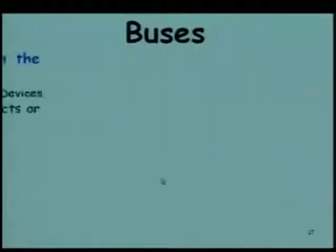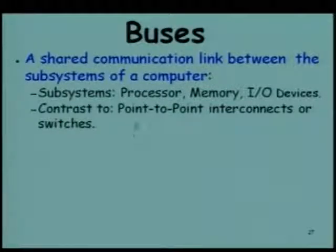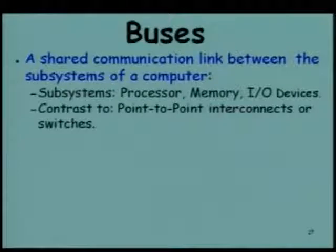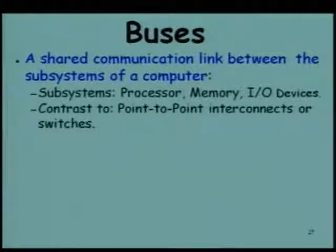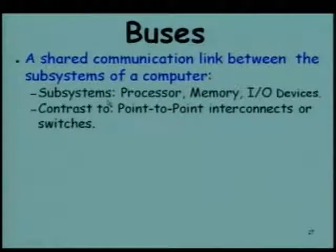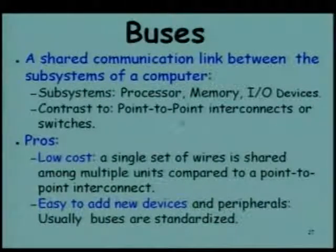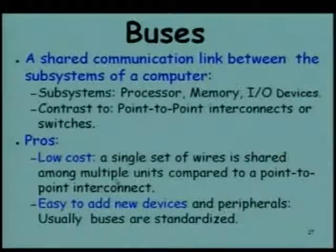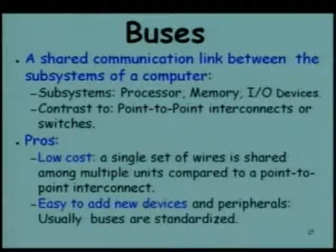Let us look at the current state of buses. We will spend a couple of minutes reviewing some basic concepts. Buses are essentially a shared communication link between the subsystems of a computer — the processor, memory, and I/O devices. A bus is a shared medium, in contrast to point-to-point interconnects or switches. Advantages include low cost, since a single set of wires is shared among multiple units, and it is easy to add devices and peripherals. Buses have also been standardized.